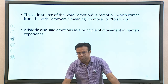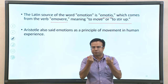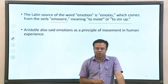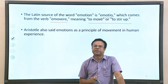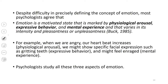We will look at a few important definitions of emotion that are more comprehensive. The word 'emotion' basically came from the Latin source word 'emovere,' from which comes the word emotion, which basically means 'to move' or 'to stir up.' That is the source term of the word emotion — anything that moves you. Whenever we feel any emotion, it is a tendency to move you, to stir you up. Aristotle also said emotions are a principle of movement in human experience.